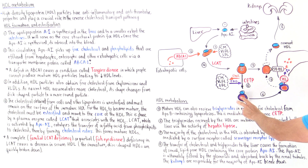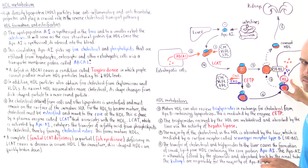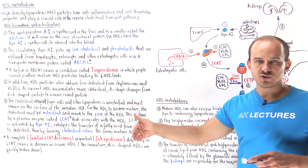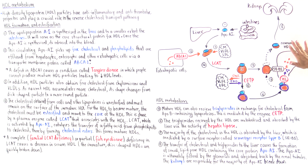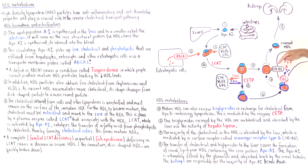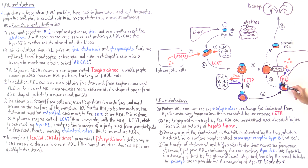We now have HDL particles containing cholesterol esters in the core, along with triglycerides, phospholipids, apolipoprotein A1, and other apolipoproteins. This particle travels back to the liver. On hepatocytes, we have an enzyme known as hepatic lipase, which breaks down triglycerides into fatty acids, which are then absorbed by the hepatocytes. In addition, we have a receptor on hepatocytes known as scavenger receptor B1 — SRB1 — which allows the HDL particle to bind to hepatocytes and facilitates the movement of cholesterol into the cell, absorbing both triglycerides and cholesterol.